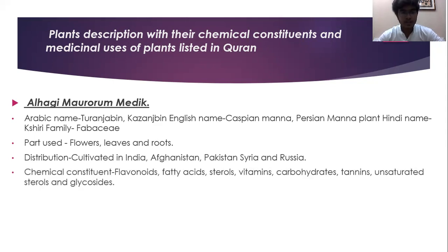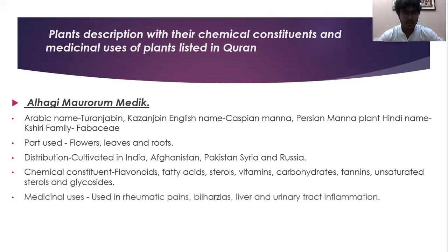Chemical constituents: flavonoids, fatty acids, steroids, vitamins, carbohydrates, tannins, unsaturated steroids, and glycosides. Medicinal uses: used in rheumatic pains, paralysis, liver, and urinary tract inflammation.